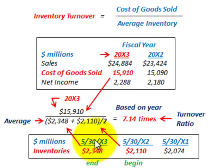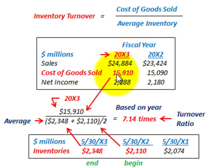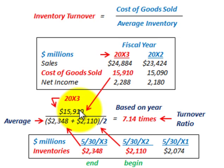We'll start with year 20x3 and determine both the inventory turnover ratio and average days of selling inventory. Looking at our financial statements for 20x3, the cost of goods sold was $15,910,000 (in millions of dollars). For the inventory turnover ratio, we place cost of goods sold in the numerator, and in the denominator we use the average inventory.